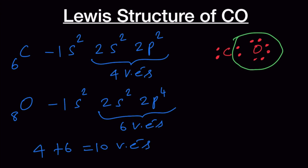The oxygen atom satisfies the octet configuration, whereas carbon does not — we have only 4 electrons around carbon. Therefore, let's bring one lone pair to the bond pair. After doing that, carbon has 1, 2, 3, 4 — so 2 bond pairs.